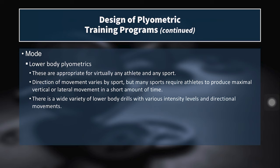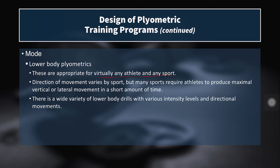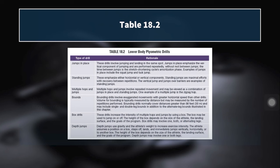Lower body plyometrics are appropriate for virtually any athlete in any sport, because the majority of sports require some sort of locomotion — moving your body from point A to point B. They involve acceleration and deceleration, most involve change of direction, and even linear sports like track and field still involve vertical ground reaction forces. Lower body plyometrics are a great way to improve the lower body's ability to generate force rapidly and to release it elastically during the concentric muscle action. There are a wide variety of different lower body drills with various intensity levels and different directions.